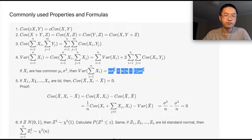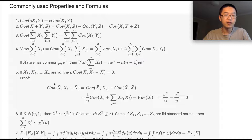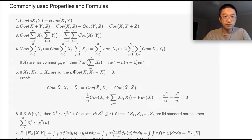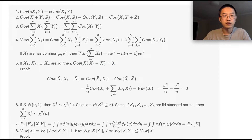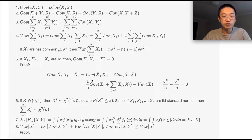Next: if X₁ to X_n are i.i.d. random variables, then the covariance of the sample mean with (X_i − sample mean) is actually zero. So there is zero correlation between the sample mean and any individual deviation from the sample mean. The proof is easy — just expand the definition of covariance and rearrange terms to get zero.